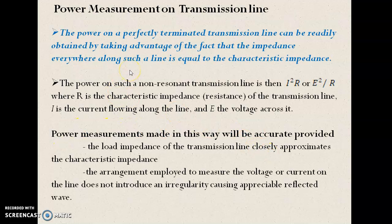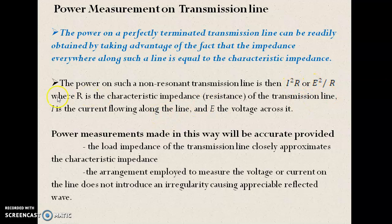So what is power measurement on a transmission line? For a perfectly terminated transmission line, if the impedance throughout the line is equal to the characteristic impedance, then we can definitely use this formula and measure the power across the transmission line. The formula is V² / R. So if you know the characteristic impedance R throughout the transmission line and you are able to measure the current and the voltage, then you can use this formula to find the power.